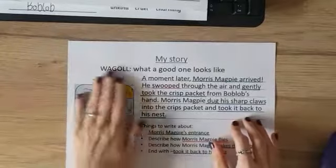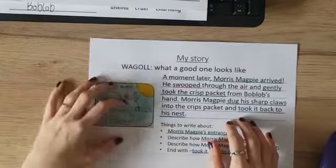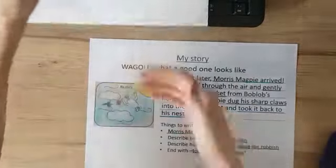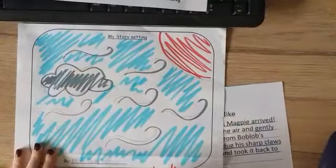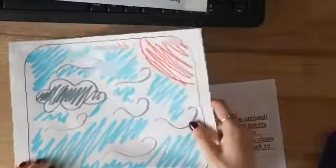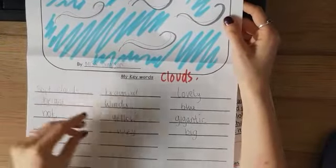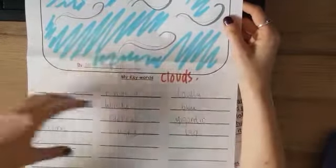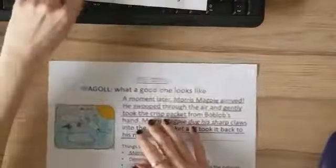From the very first starting points of our story, the children created their own settings. This is the one we created as a class, with clouds, and then we had our adjectives to help us, and the children created their own sentences to do with their settings.